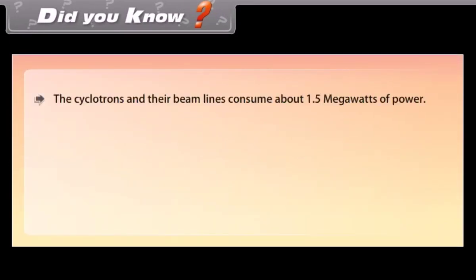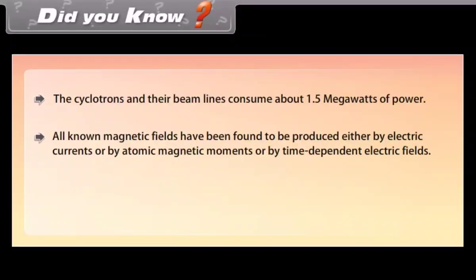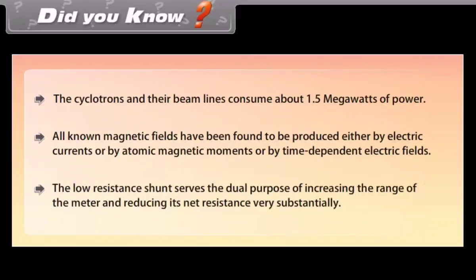Did you know? Cyclotrons and their beam lines consume about 1.5 megawatts of power. All known magnetic fields have been found to be produced either by electric currents, by atomic magnetic moments, or by time-dependent electric fields. The low resistance shunt serves the dual purpose of increasing the range of the meter and reducing its net resistance substantially.